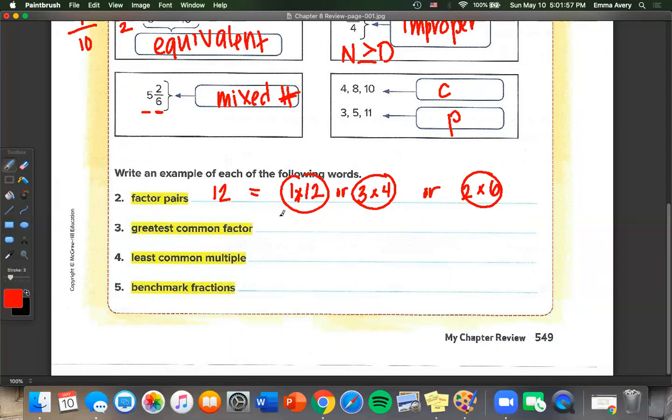Now we want to find a greatest common factor. So let's give two numbers. Let's do 12 and 15. So 12, our factors are 1, 2, 3, 4, 12, and 6. And for 15 our factors are 1 times 15 or 3 times 5. So our greatest common factor is going to be 3.